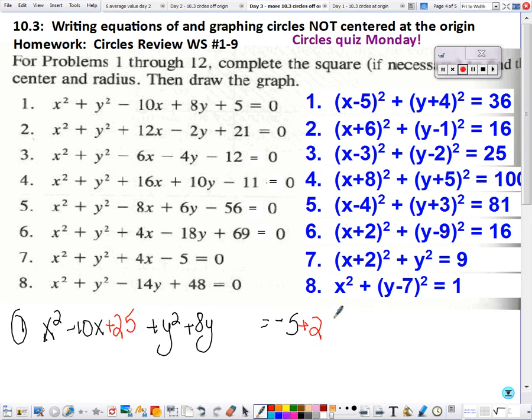So now completing the square, we're going to take half of 10 and square it. You have to remember to add it to the right. Half of 8 and square it. So now we can factor each piece here.